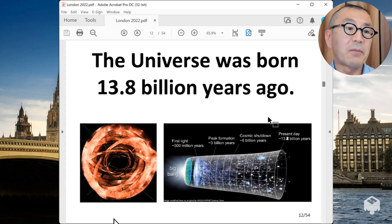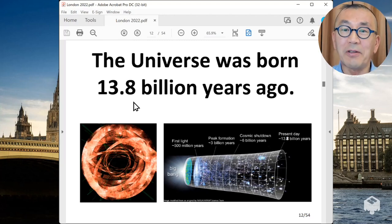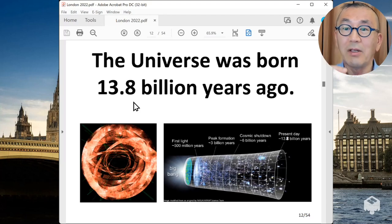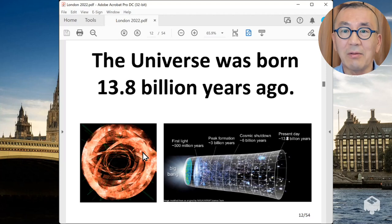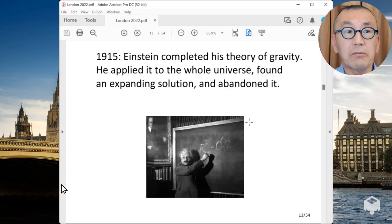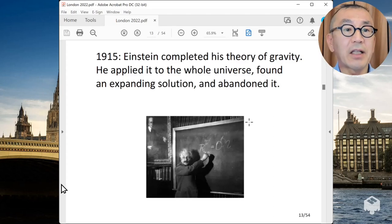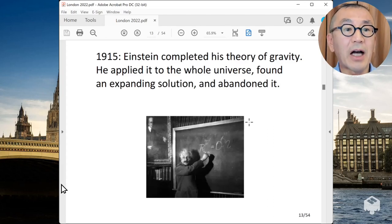We now understand that the universe was born 13.8 billion years ago. This is actually amazing knowledge that we understand the age of the universe in three decimal places. When I was a grad student, astronomers were debating whether the universe is 10 billion years old or 20 billion years old. Knowing the age of the universe in three decimal places is amazing. That shows how much we have made progress in the accurate measurement of some of the properties of the universe.